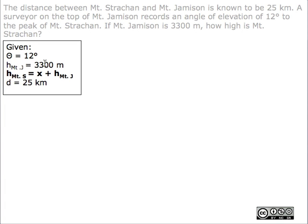First, we have to look at our given values. We know the angle of elevation is 12 degrees. The height of Mount Jameson is 3,300 meters. The height of Mount Strachan is x plus the height of Mount Jameson, and the distance between them is 25 kilometers.